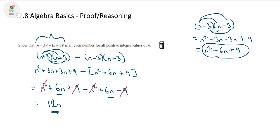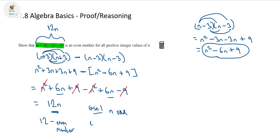We've just shown that this whole expression equals 12n. How does that help us show it's always even for all positive integer values of n? Well, we know 12 is an even number. In case 1, when n is odd, we're multiplying an even number (12) by an odd number — and even times odd gives an even number. Happy days.